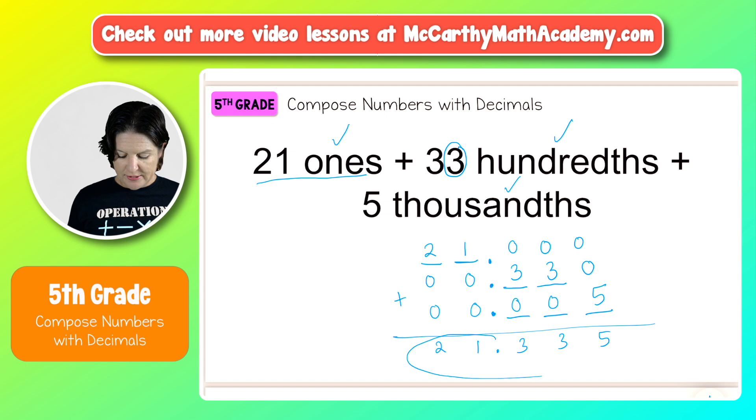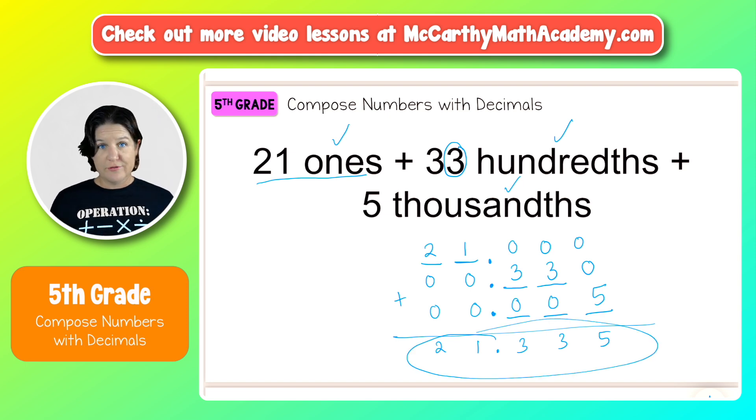So to read this would be twenty-one and three hundred thirty-five thousandths. And this is written in standard form, which composes that number back together. Now something you want to be careful of is that some students might say, oh, I can just go ahead and say, okay, twenty-one ones and thirty-three hundredths and five thousandths. There we go. That works for this one.